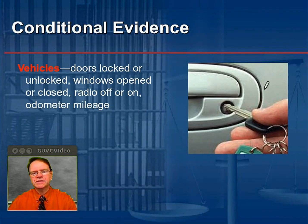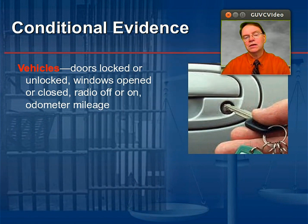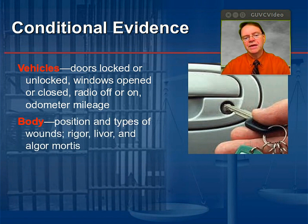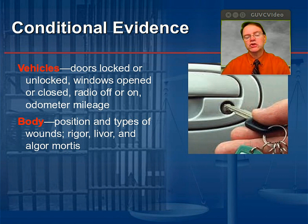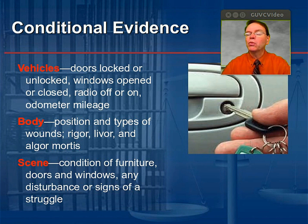More conditional evidence: for vehicles — were the doors locked or unlocked, were the windows open or closed, was the radio on or off, and what was the odometer mileage? The position of a person's body, wounds, rigor, livor mortis, and algor mortis. And the scene itself: the condition of the furniture, doors and windows, any disturbances or signs of a struggle. These are all secondary to the actions of people — whether it's the victim, the suspect, or a combination.